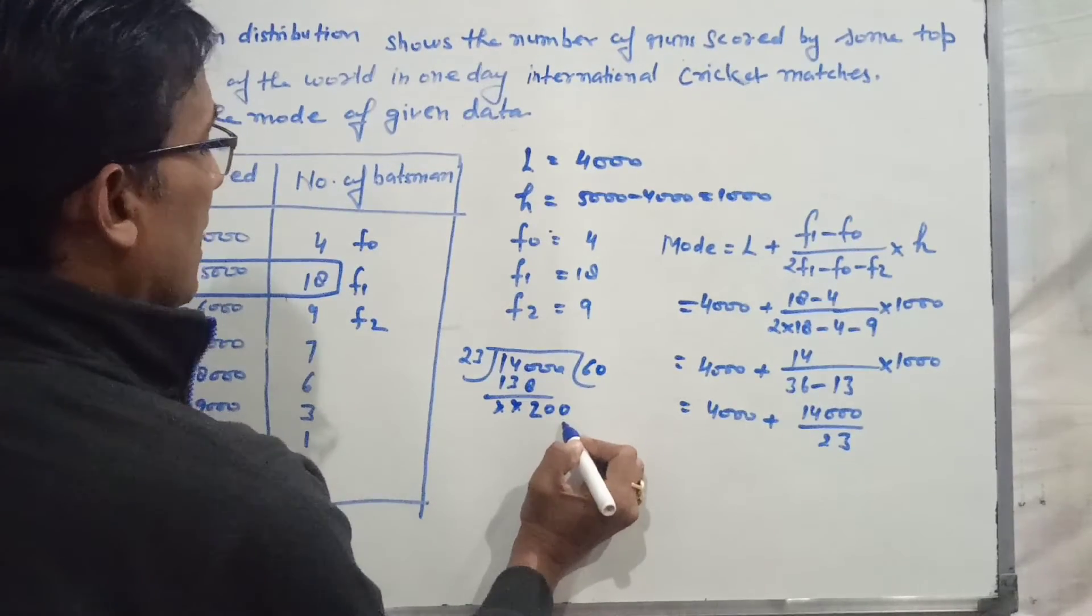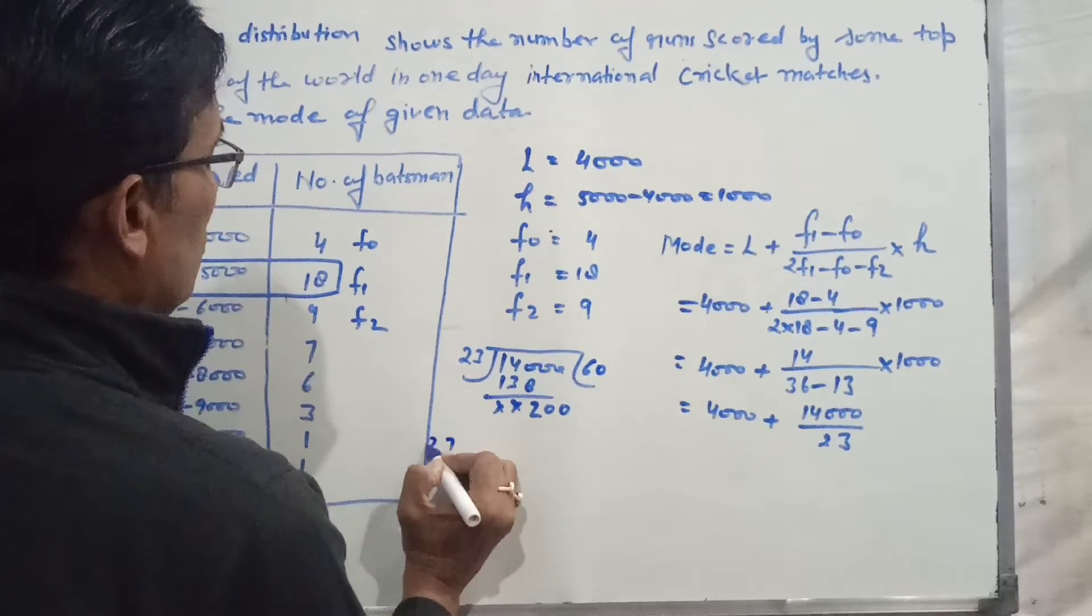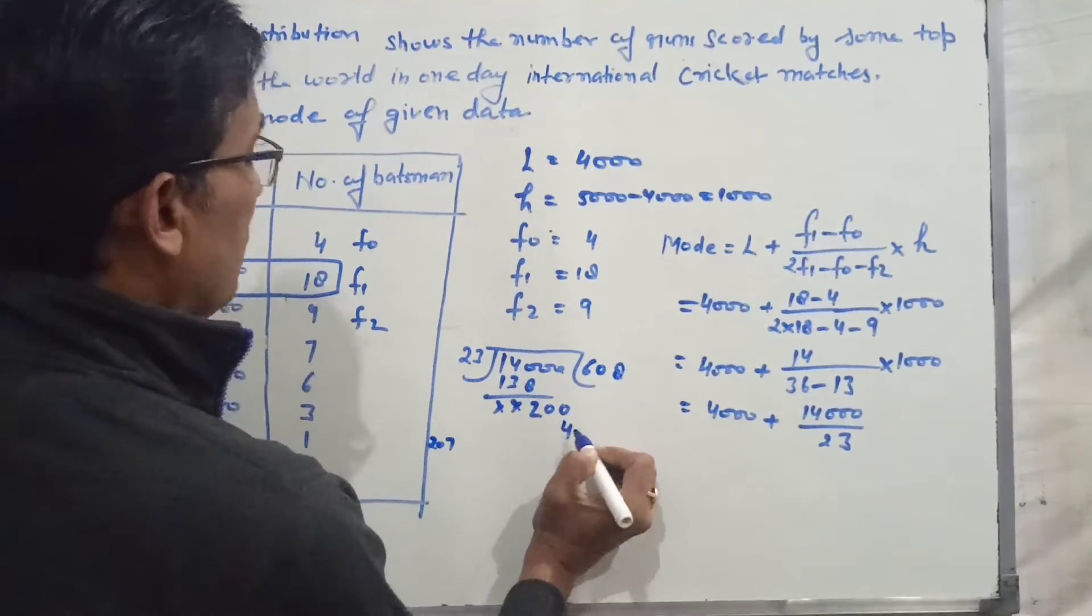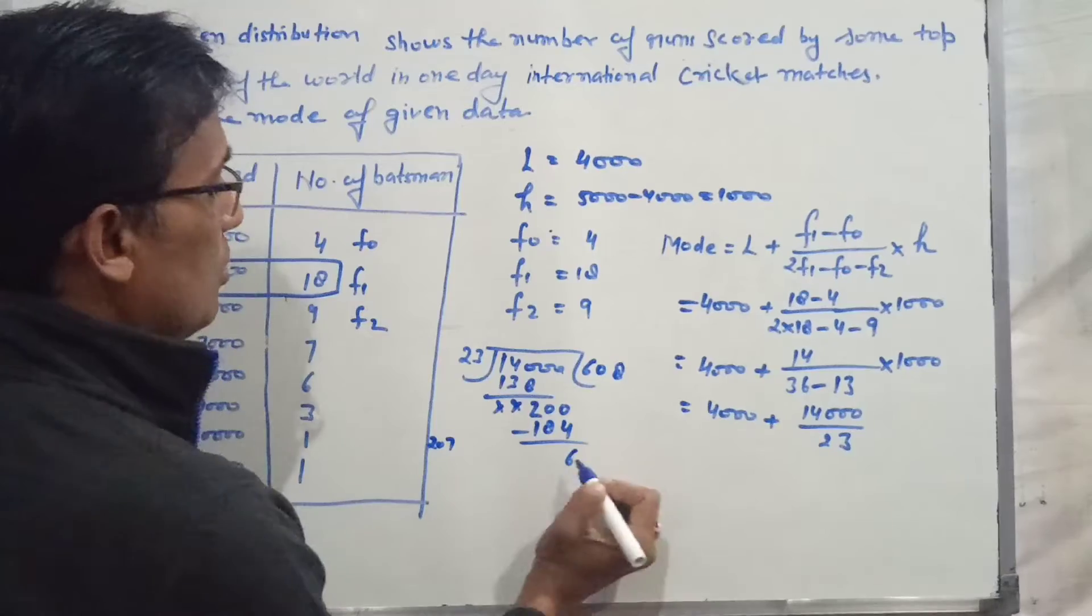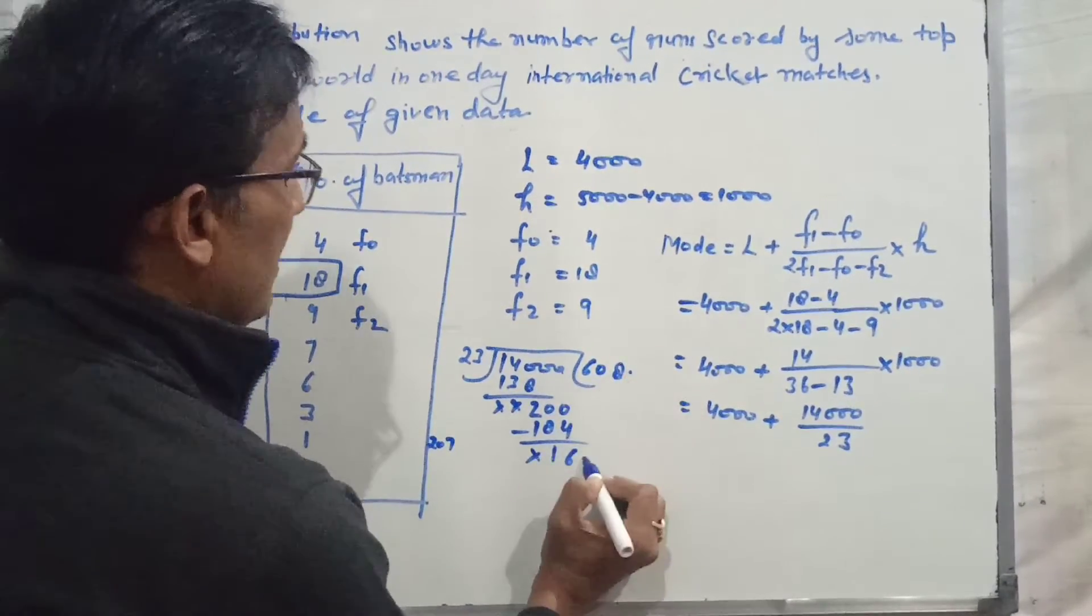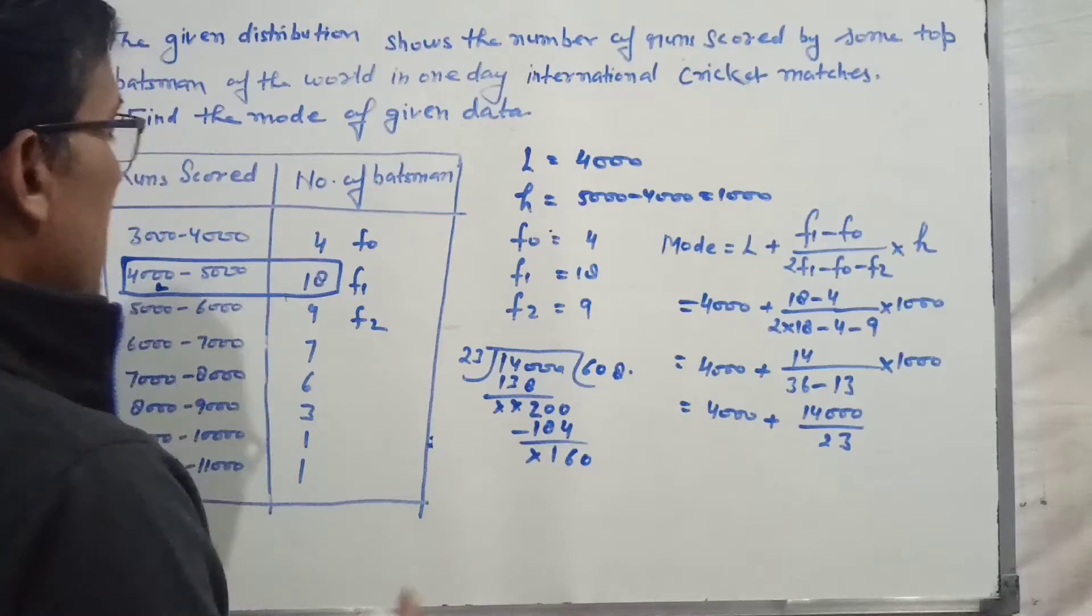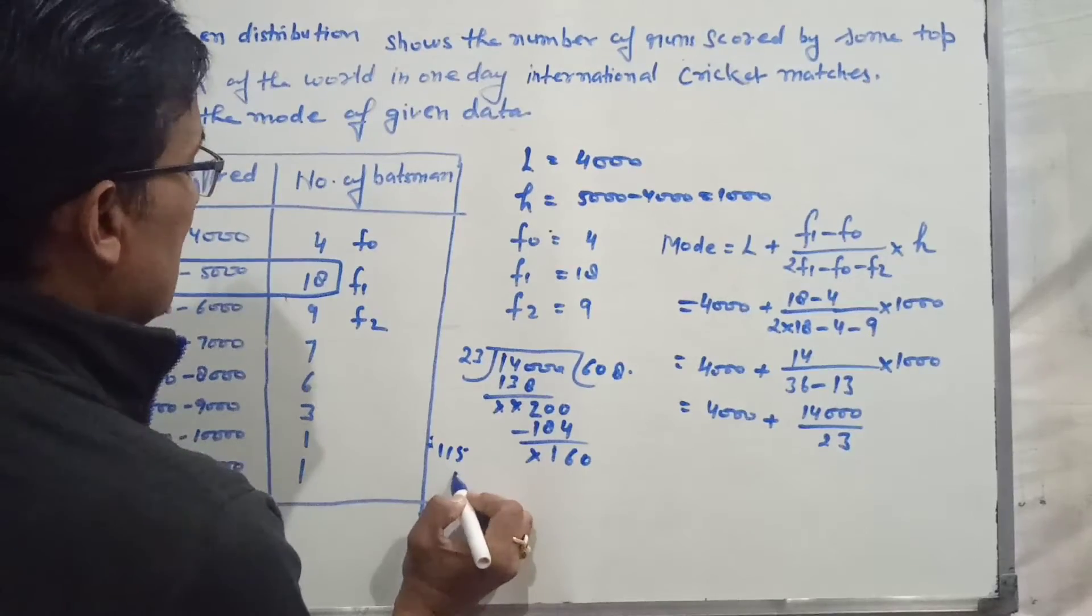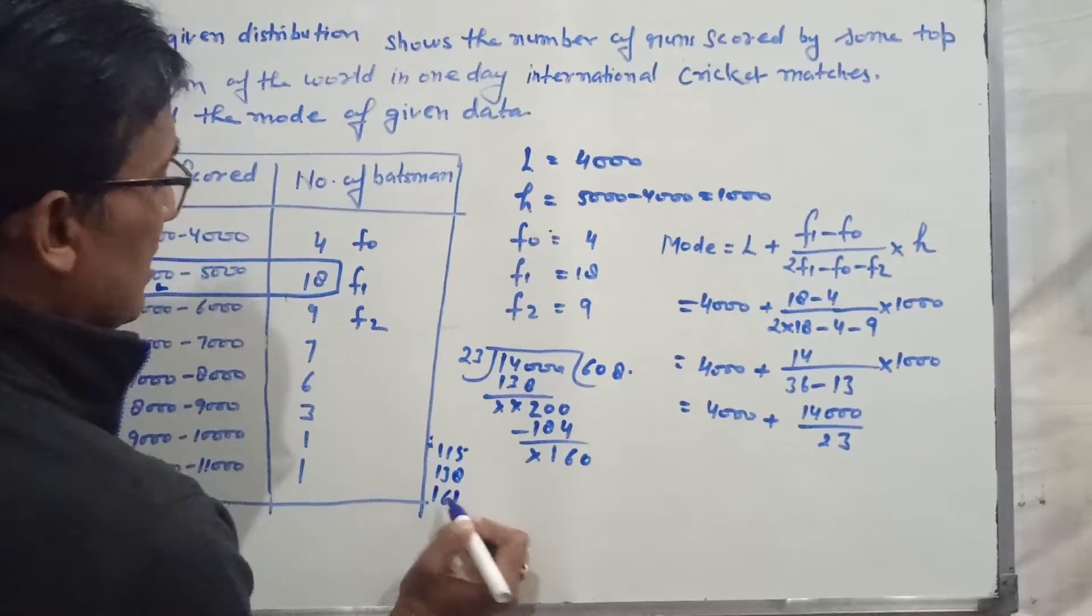Continuing the division: 16, then 18 minus 10 minus 4 equals 6, 9 minus 8 equals 1. Here cancel the decimal point and you have zero.